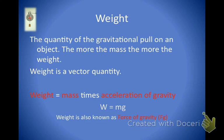So what is weight? Weight is the quantity of the gravitational pull on an object. The more mass, the more weight. It says here that weight is a vector quantity. Remember, vector meaning it has a size and direction. The size of it is the amount: 500 pounds, 200 pounds, 500 newtons, 200 newtons. That's the amount.